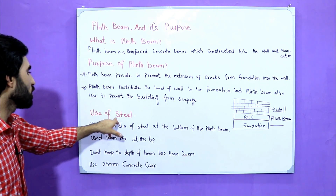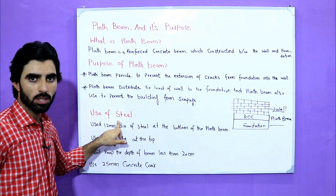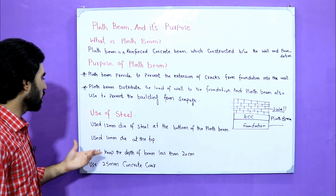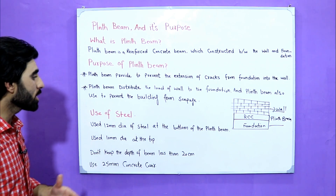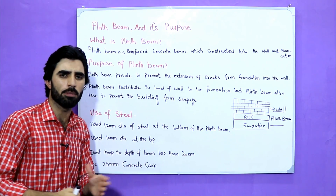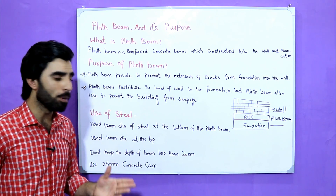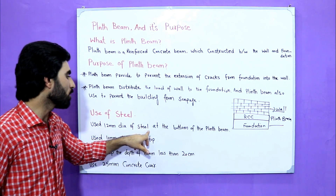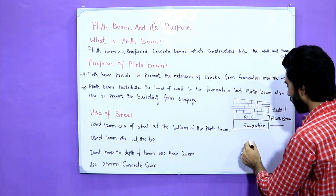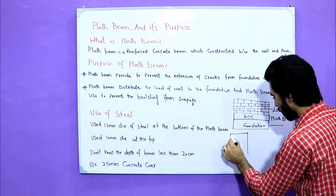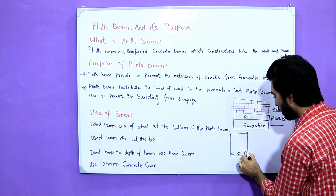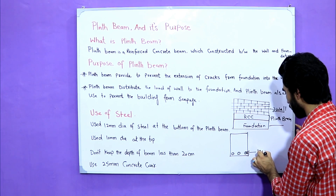Now, use of steel. This is very important for you to know, because sometimes there isn't any design for plinth beam and many people are using different diameters of steel bar. But use a minimum 12 millimeter diameter steel bar at the bottom of the plinth beam. As you can see, this is the cross section of the plinth beam — at the bottom, use minimum 12 millimeter diameter steel bar.